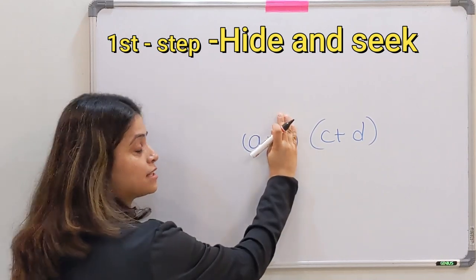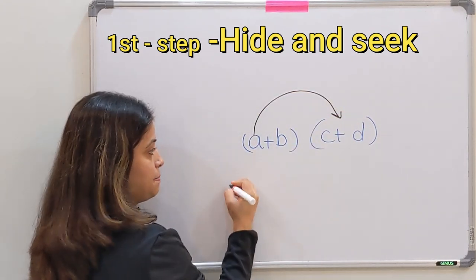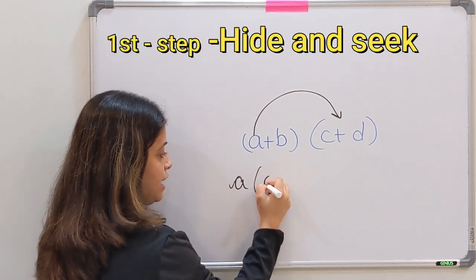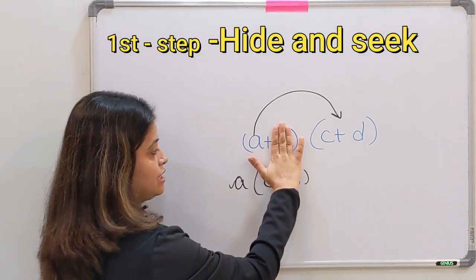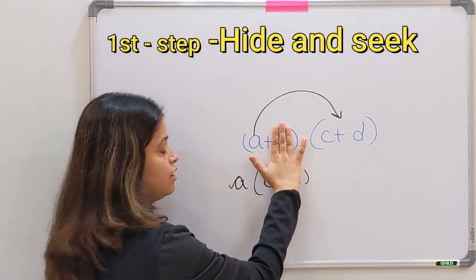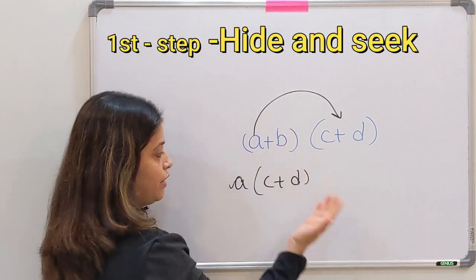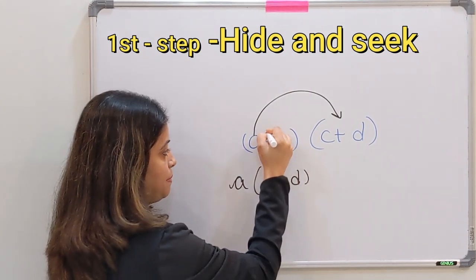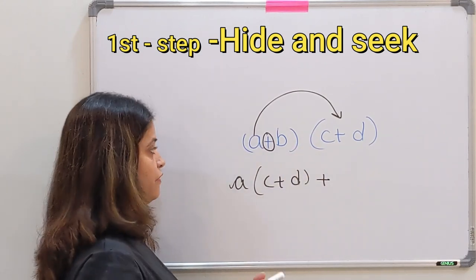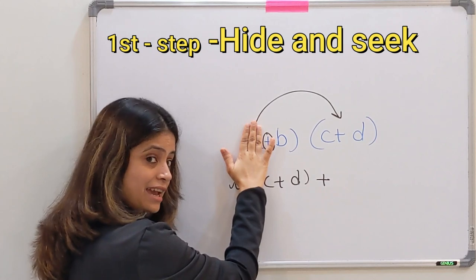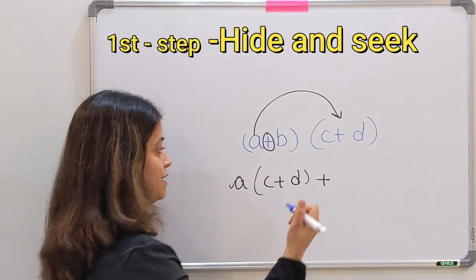Yes, hide and seek. B ko hide karenge, A ko multiply karenge C plus D ke saath. Like this: A into C plus D. So basically we have just put a hand over here so A can be multiplied by C plus D. Next, the plus sign over here will come here.